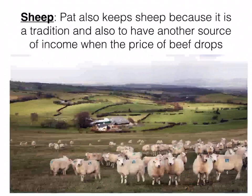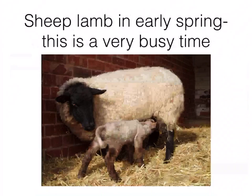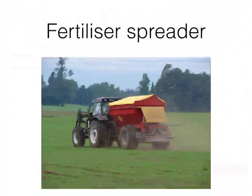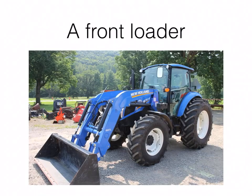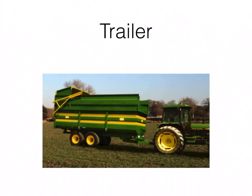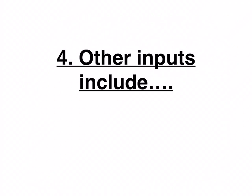Pat also buys in sheep - it's a tradition, probably stemming from his father's time, and it supplements his income in case the price of beef drops, which we've seen happen in Ireland recently. He's busy with the sheep especially in springtime during lambing season. Machinery is another big input: he has two tractors, a fertilizer spreader, a trailer, and a front loader. Remembering even two of those pieces of machinery is perfect.